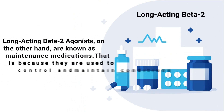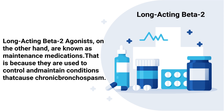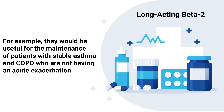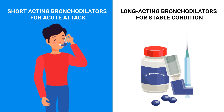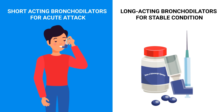Long-acting beta-2 agonists, on the other hand, are known as maintenance medications. That is because they are used to control and maintain conditions that cause chronic bronchospasm. For example, they would be useful for the maintenance of patients with stable asthma and COPD who are not having an acute exacerbation. If the patient is having an acute attack, a short fast-acting bronchodilator would be indicated, but if they're in stable condition, this is where long-acting bronchodilators are useful to help prevent those acute exacerbations.